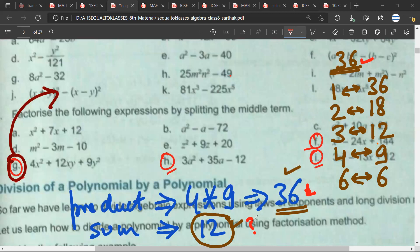Is the sum of 1 and 36 equal to 12? No sir. So this pair is out. Can the sum of these two numbers be 12, Mr. Sartak? No sir. Can 3 plus 12 be equal to 12? No sir.